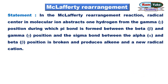In the McLafferty rearrangement reaction, the radical center in the molecular ion abstracts one hydrogen from the gamma position, during which a pi bond is formed between the beta and gamma position, and the sigma bond between the alpha and beta position is broken. This is also known as beta cleavage, and it produces neutral species like an alkene and a new radical cation.